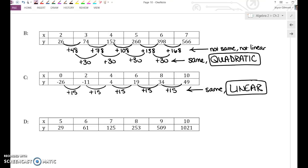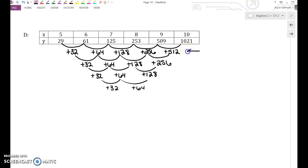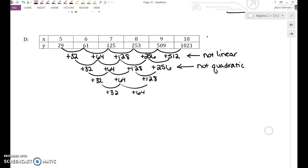Okay, try D on your own. Find the first and potentially second level of differences on your own for D. Okay, so the first level of differences are not constant. That means it is not linear. The second level of differences are not constant. So that makes it not quadratic. And right now, we're simply asking, is it linear, quadratic, or neither? So we can say this is neither.